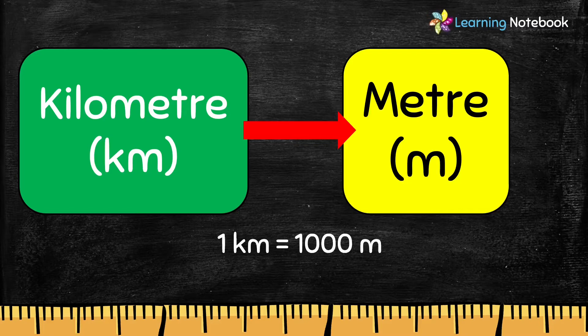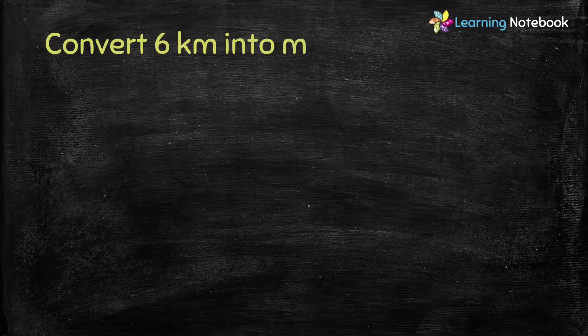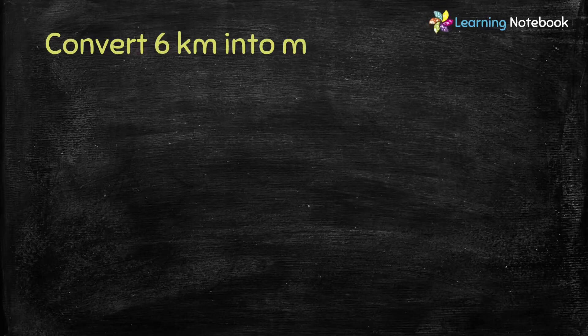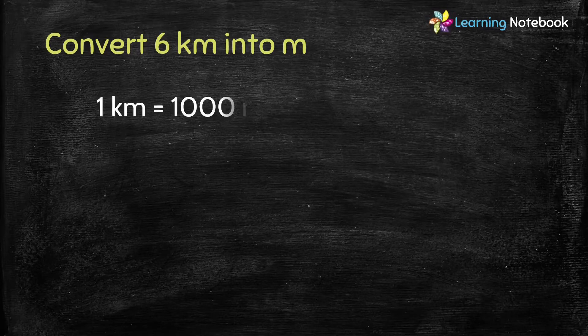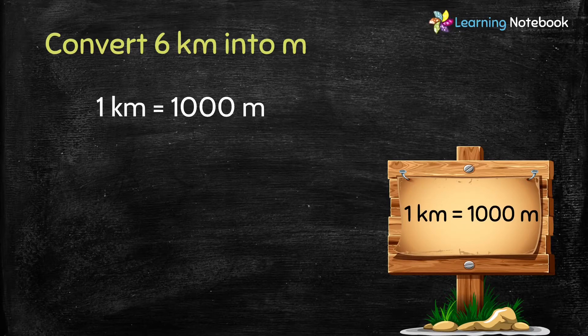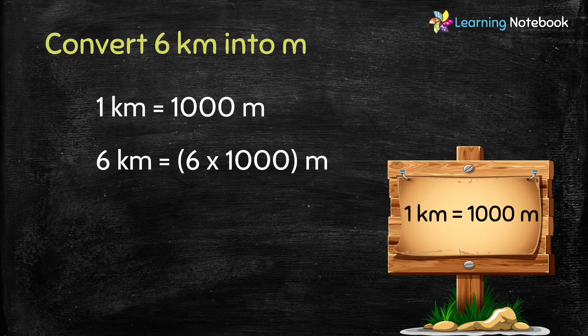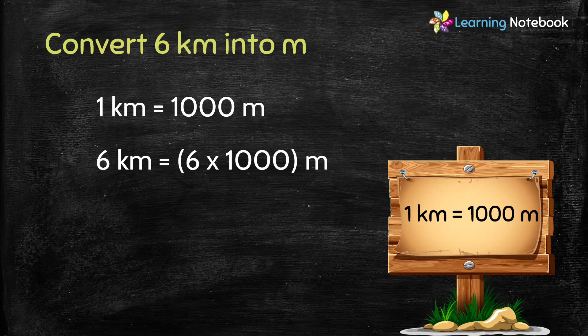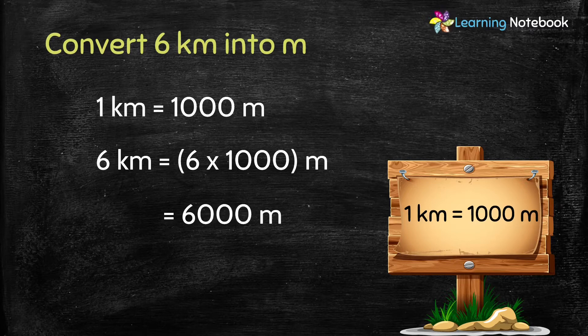Now, let's do some questions to see the conversion. First question is, convert 6 kilometer into meter. As I just told you that 1 kilometer equals to 1000 meters. So, to convert 6 kilometer into meter, we will multiply 6 by 1000. So, 6 into 1000 equals to 6000. Therefore, 6 kilometer equals to 6000 meters.